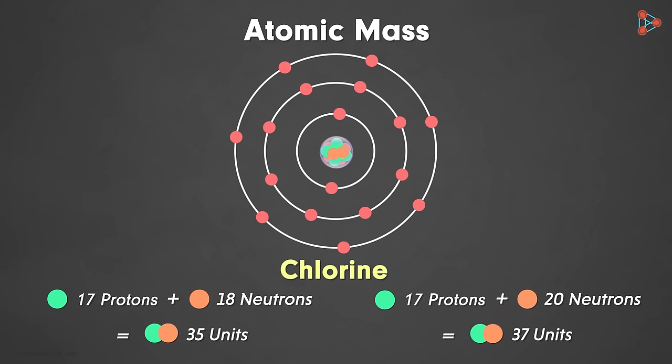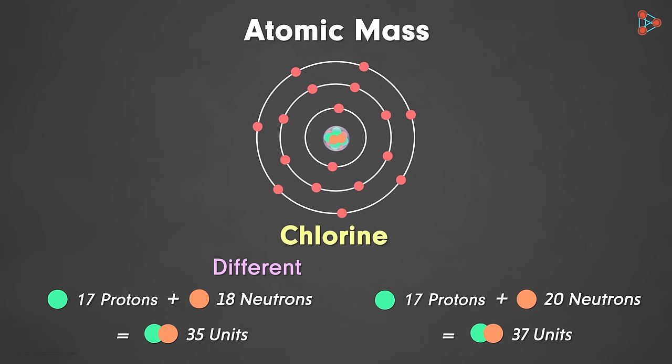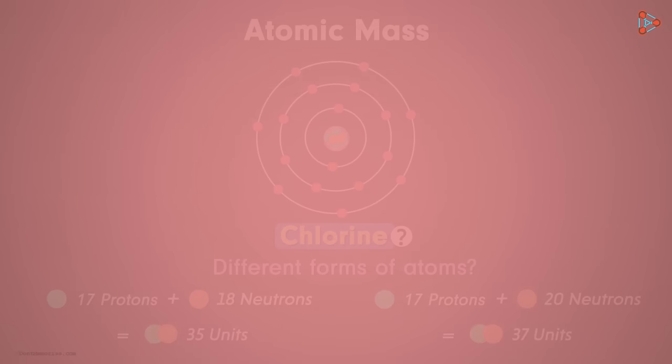But now the next question to pop up in our minds is, how can we have one element having two different kinds of atoms? And is this valid only for chlorine, or are there other elements also which exhibit this phenomenon? Let's find out more about this mysterious concept of isotopes in the next video!